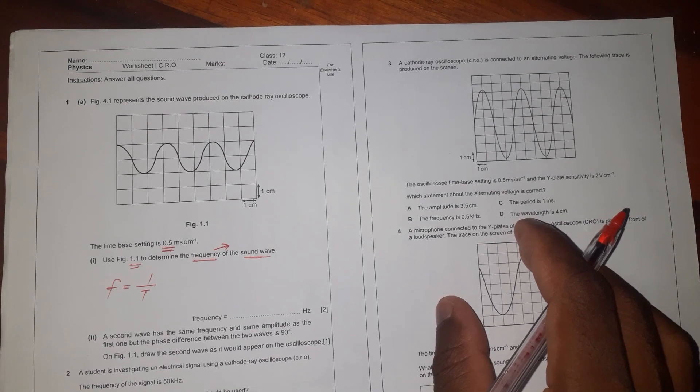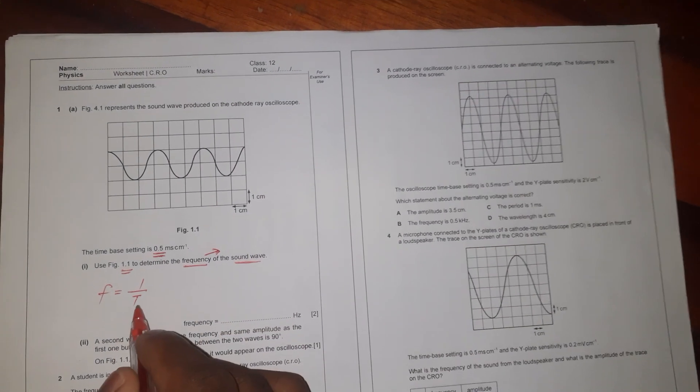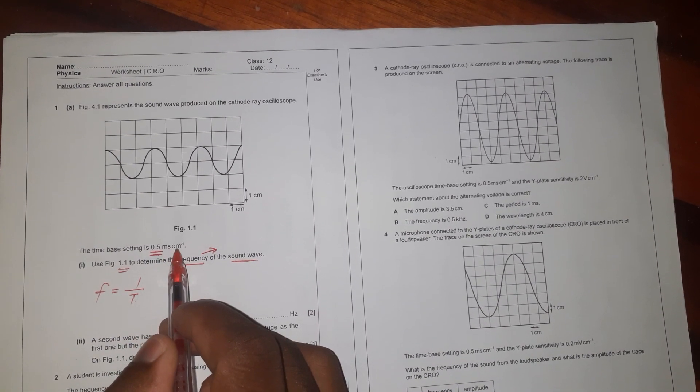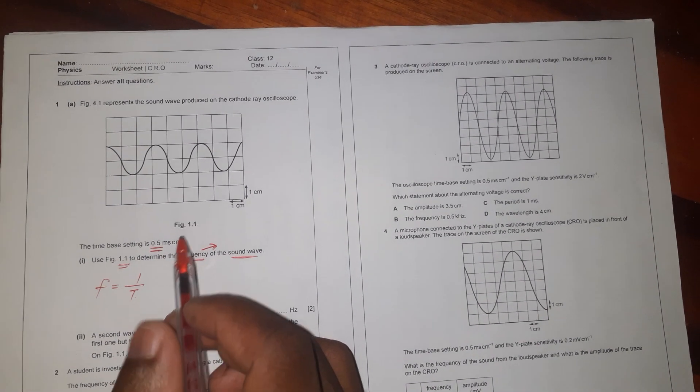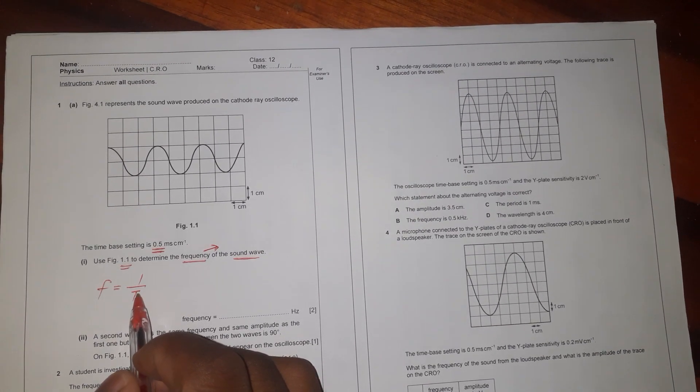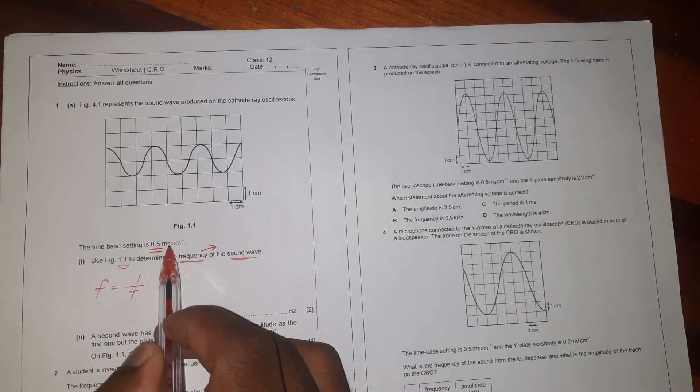Now for period, we are given the time base setting which is in milliseconds per centimeter, but we know that the SI unit of time should be seconds. So therefore we have to convert that 0.5 milliseconds per centimeter to only have seconds as the unit.